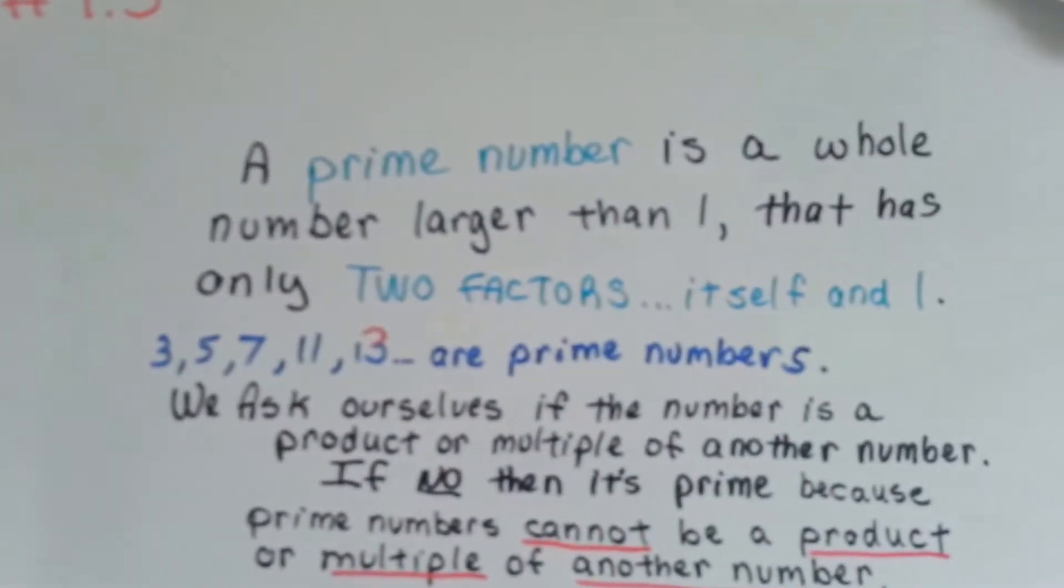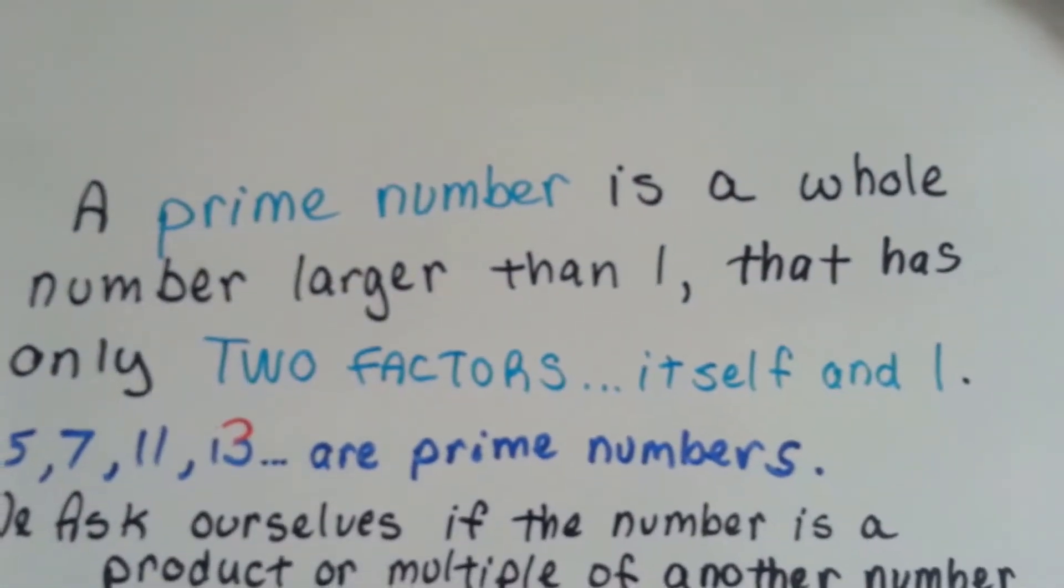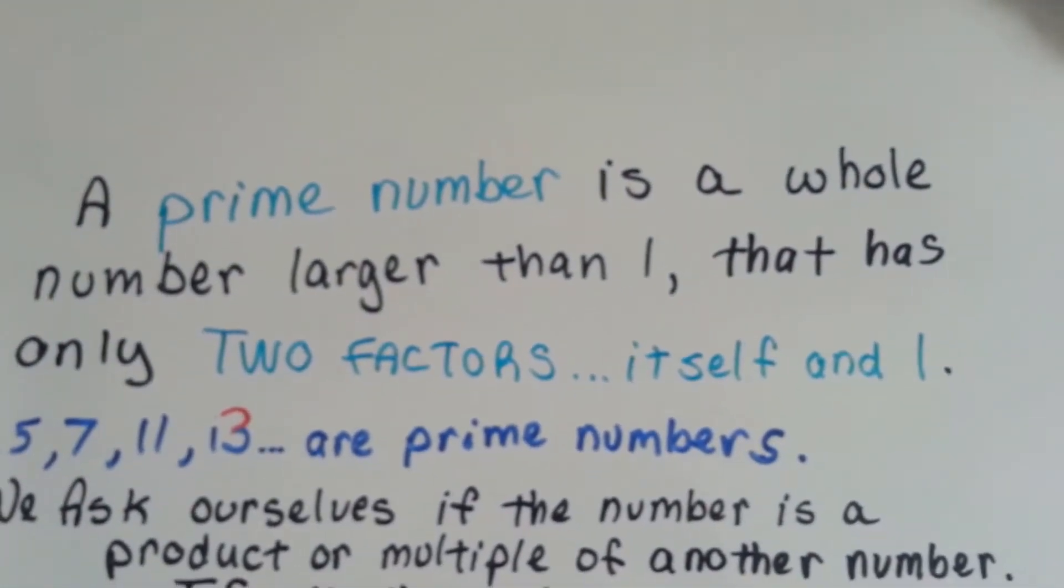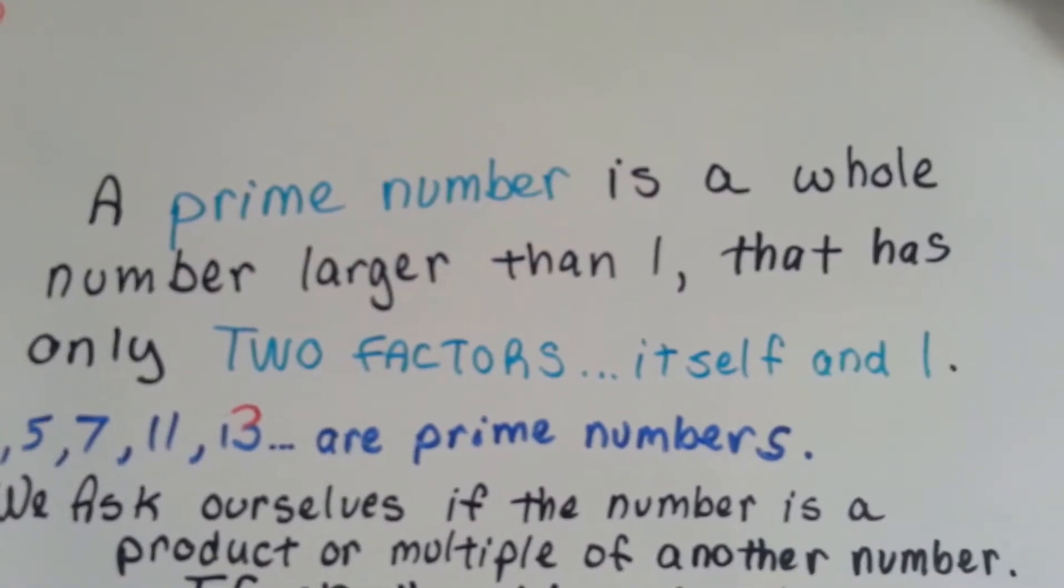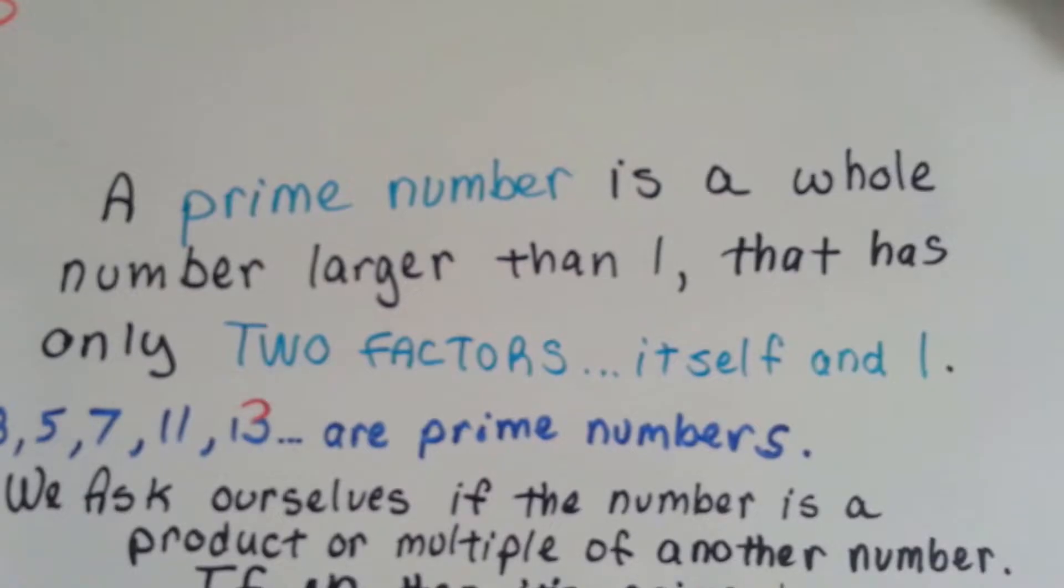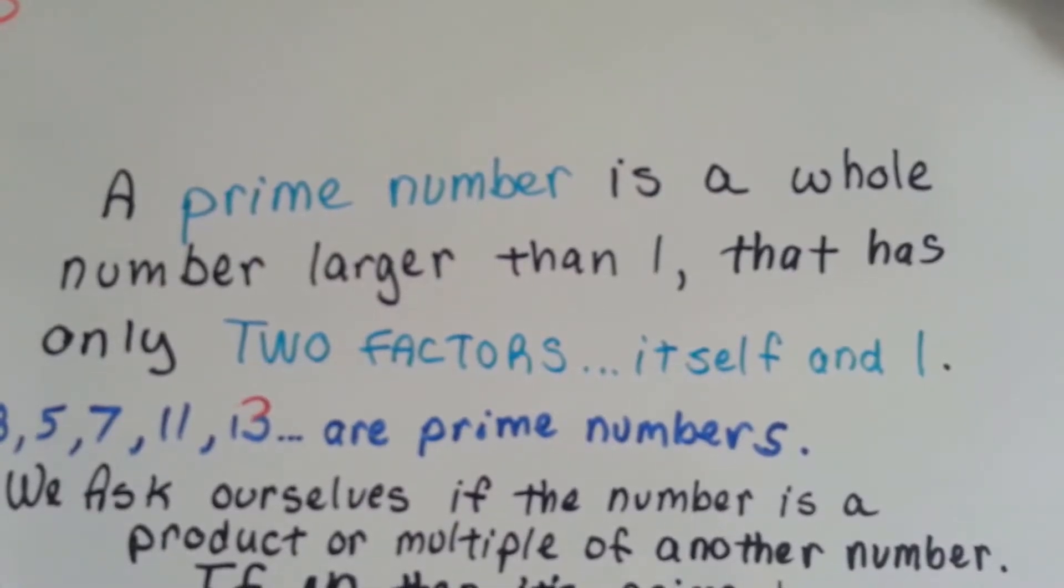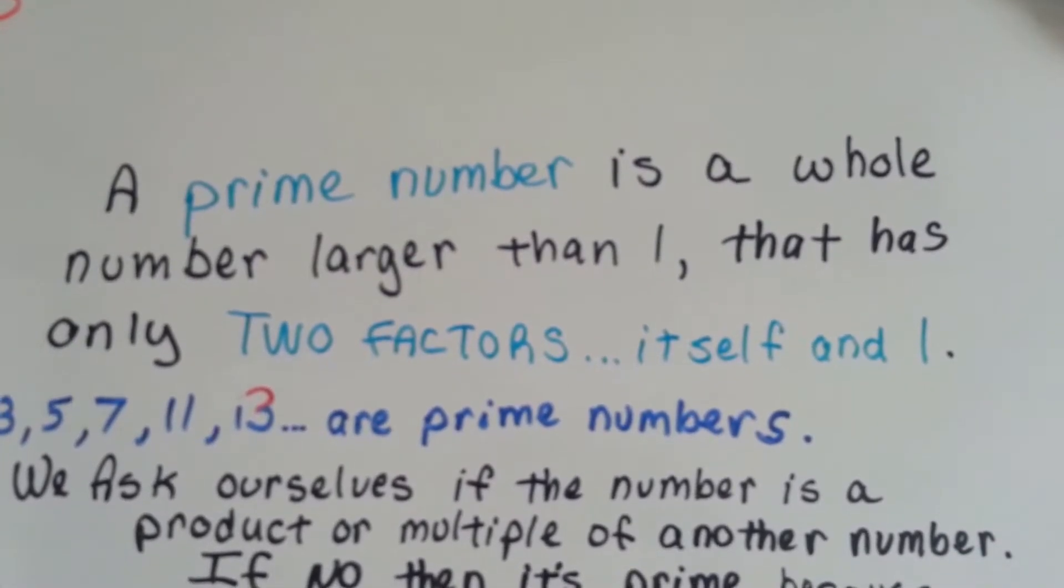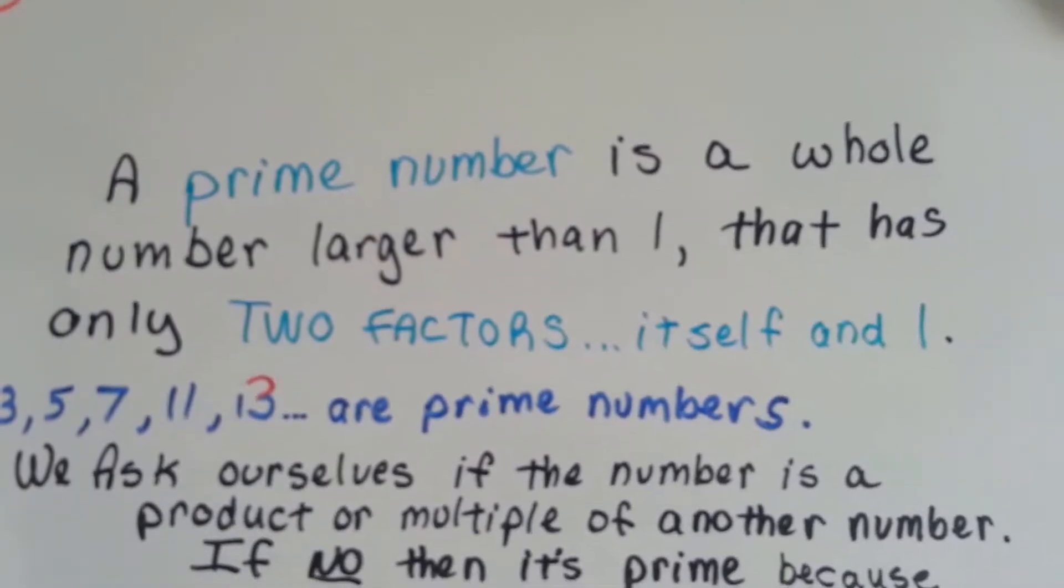A prime number is a whole number larger than 1 that has only 2 factors, itself and 1. When you multiply, the only way to get to that prime number is to multiply itself and 1. So, 3, 5, 7, 11, and 13 are prime numbers.